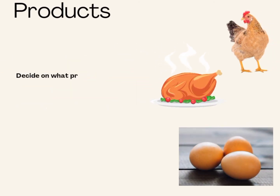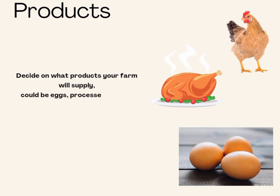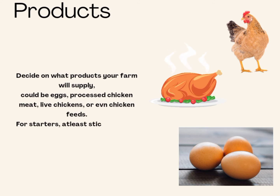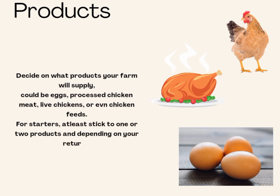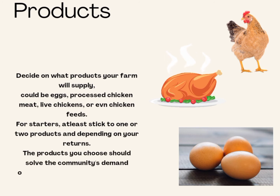The products: decide on what products your firm will supply. It could be eggs, processed chicken meat, live chickens, or even chicken feeds. For starters, stick to at least one or two products. The products you choose should solve the community's demand — otherwise, if there isn't demand for your products, the business may struggle.